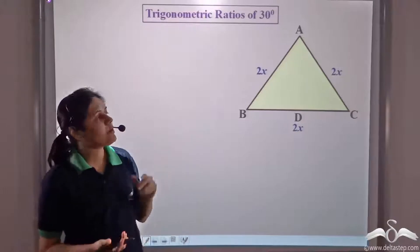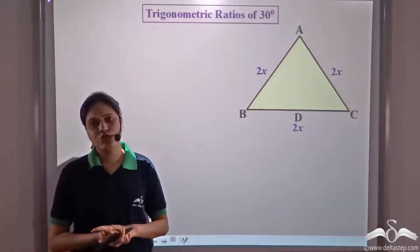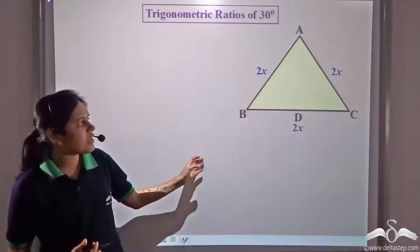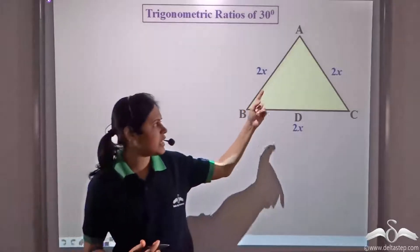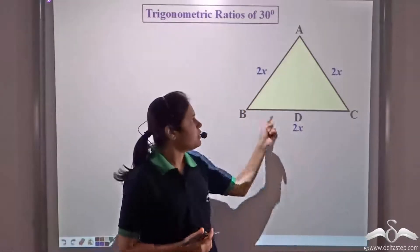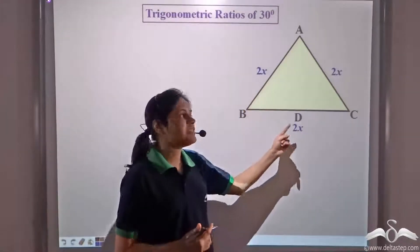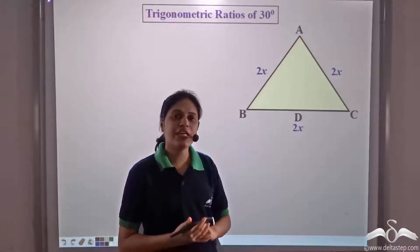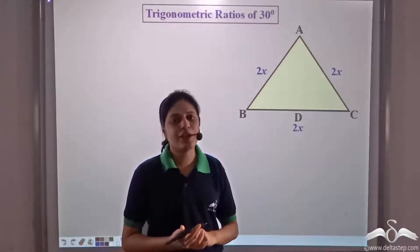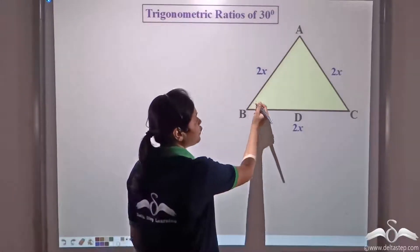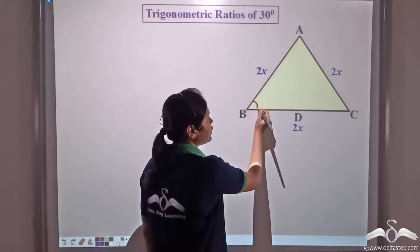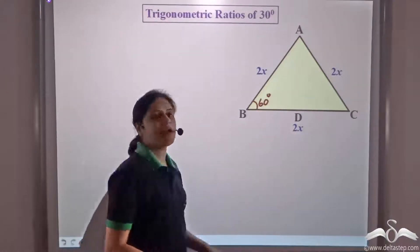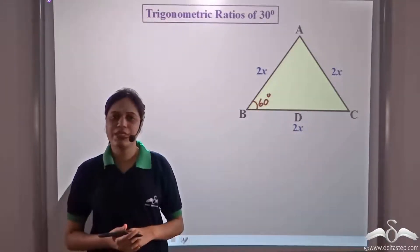Let us find the value of trigonometrical ratios for angle 30 degree. For that, we take an equilateral triangle. Each side is equal to 2x. We know that each angle of an equilateral triangle is equal to 60 degree, so all the angles are equal to 60 degree.